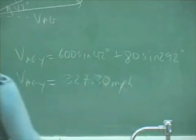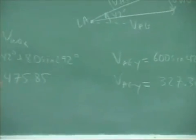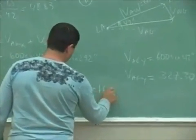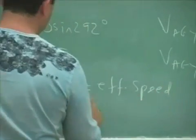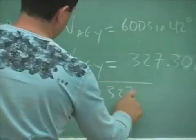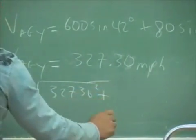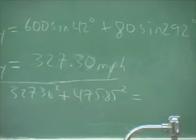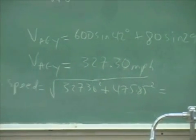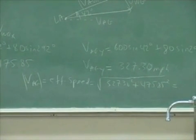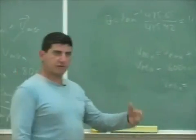Okay, so now this is your effective velocity. V_AG is effective speed. Magnitude of V_AG is effective speed, which is square root of 327.30 squared plus 475.85 squared. That is now the effective speed. The wind's action on you caused your effective speed to change.